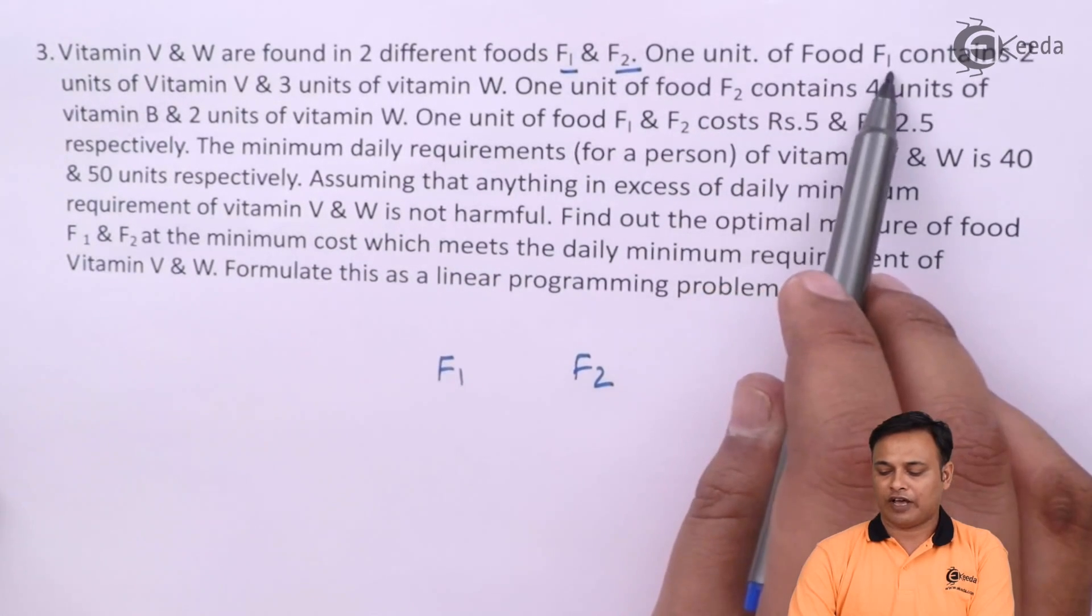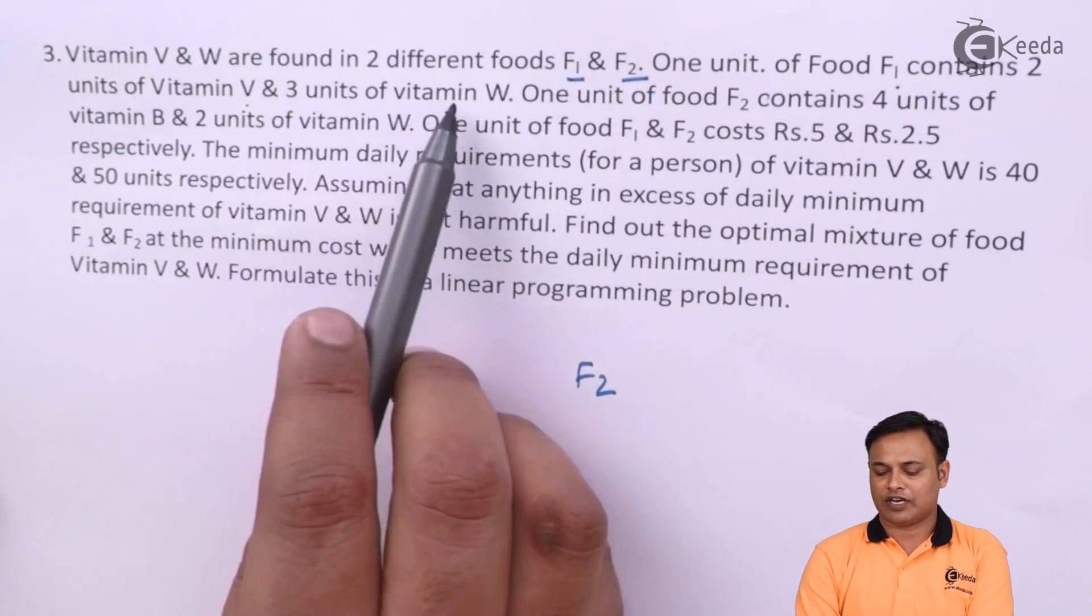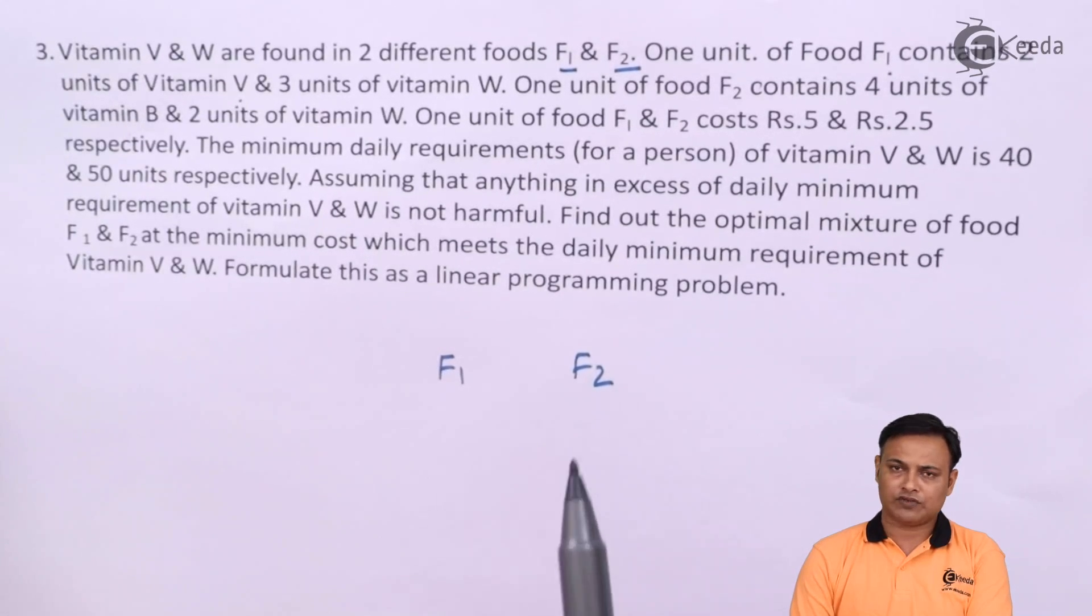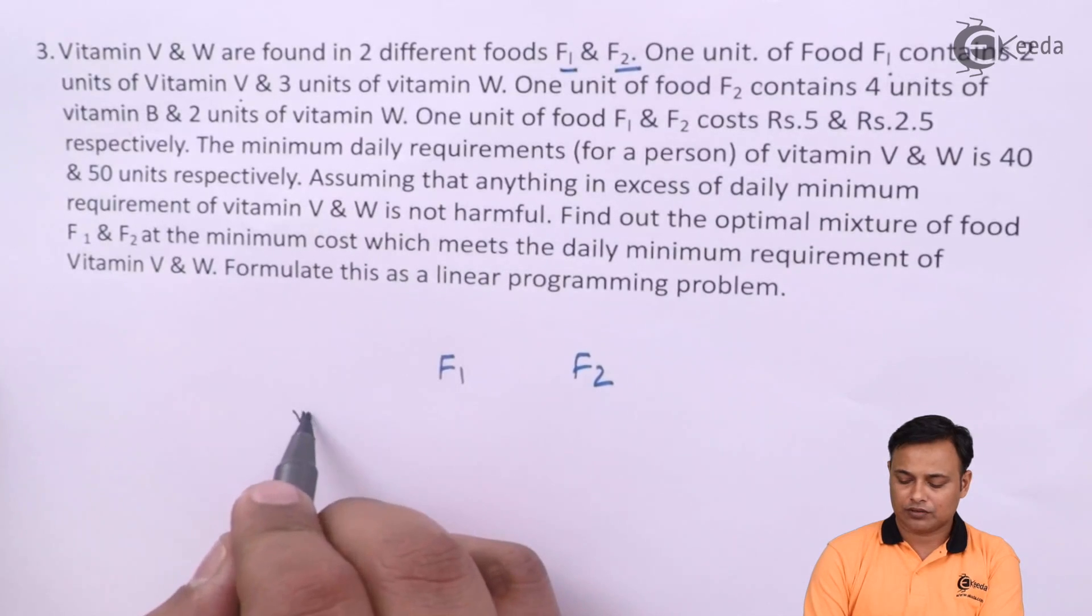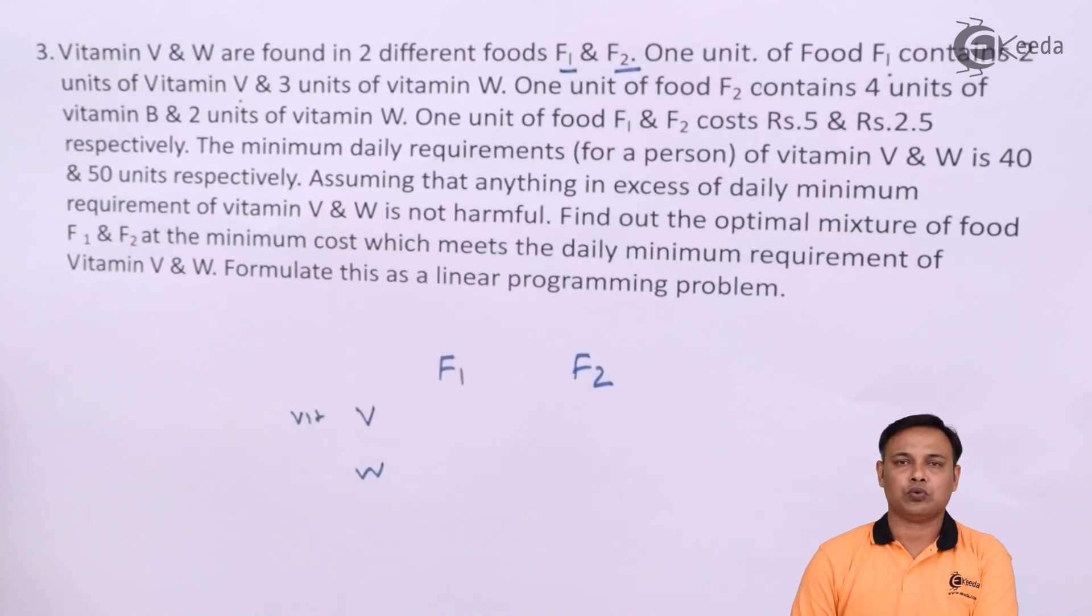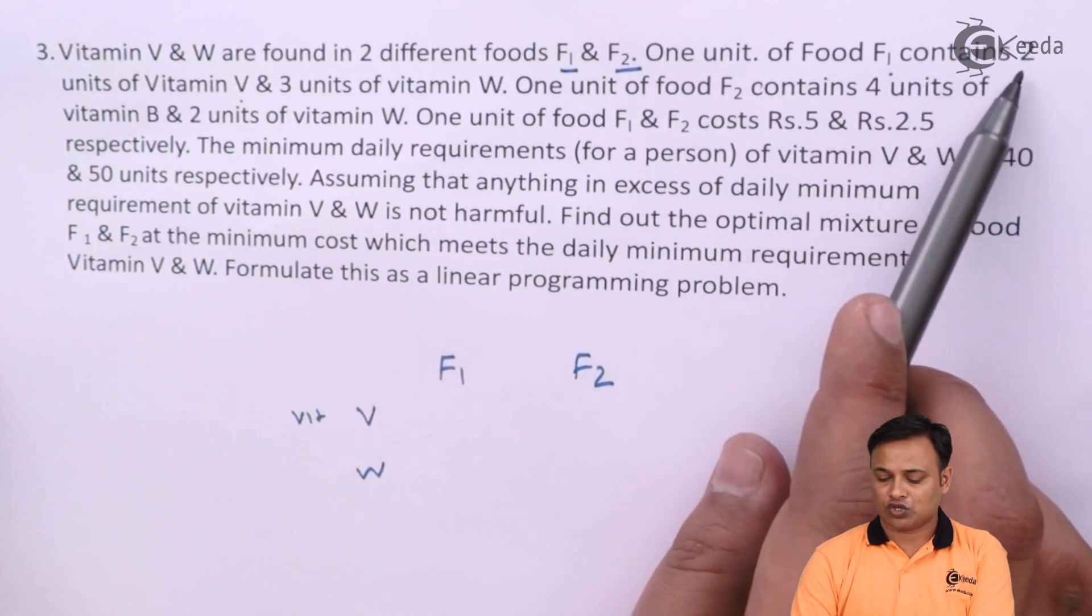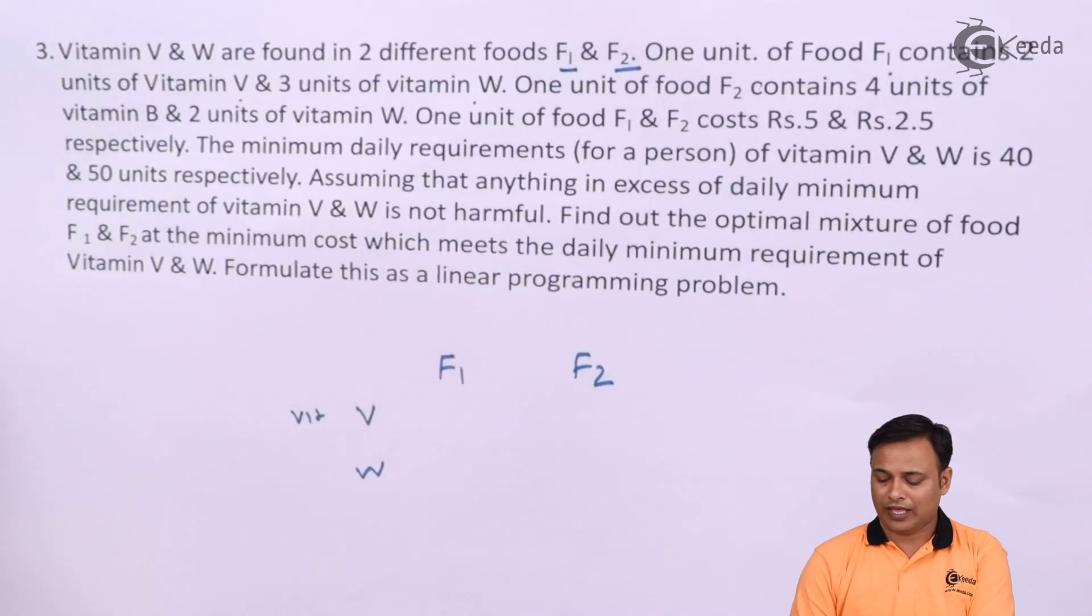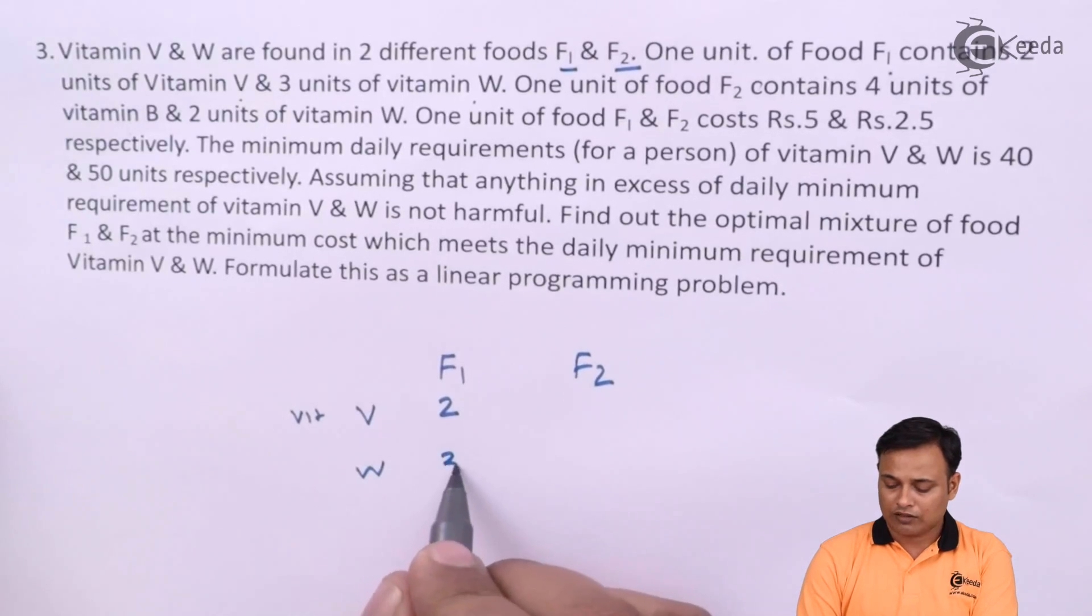1 unit of food F1 contains 2 units of Vitamin V and 3 units of Vitamin W. We have got 2 food products F1 and F2 which we have to consume and by consuming this we are going to get Vitamin V and Vitamin W. Food 1 in 1 unit has 2 units of V and 3 units of W.